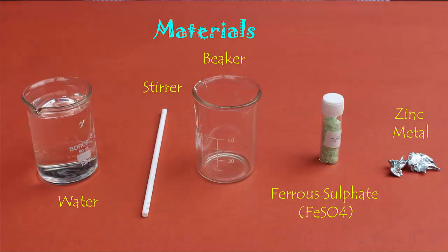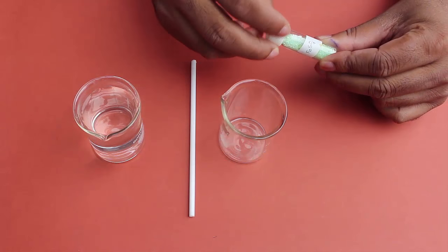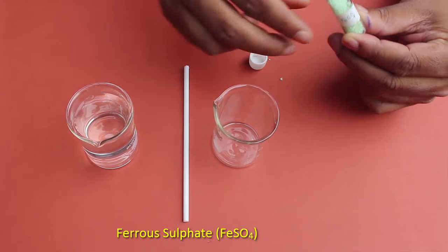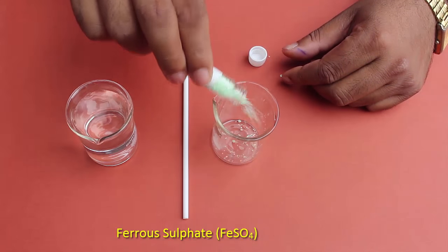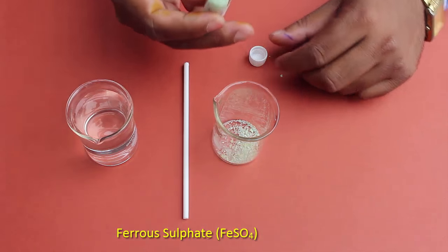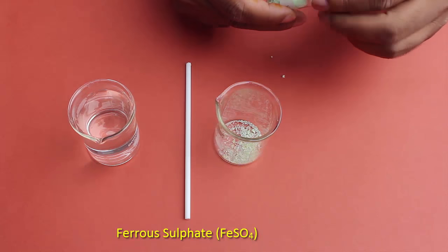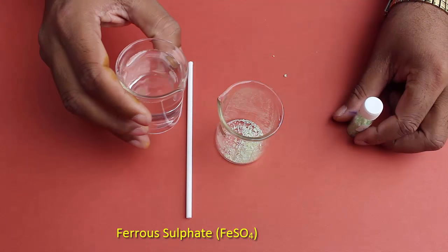Now we are going to prepare a solution of ferrous sulphate. So for this we are taking these crystals of ferrous sulphate into a beaker. Like this we are adding the ferrous sulphate into the beaker. Now adding some water to the beaker.